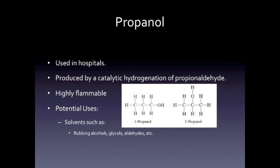Propanol, C3H7OH, is mainly used for things that you would find in hospitals. Propanol is used for rubbing alcohols and cleaning solvents for wounds, or preparing the spot where your arm is about to receive an injection. Propanol is produced by catalytic hydrogenation of propionaldehyde — that is, the reaction of molecular hydrogen with propionaldehyde, an organic compound.